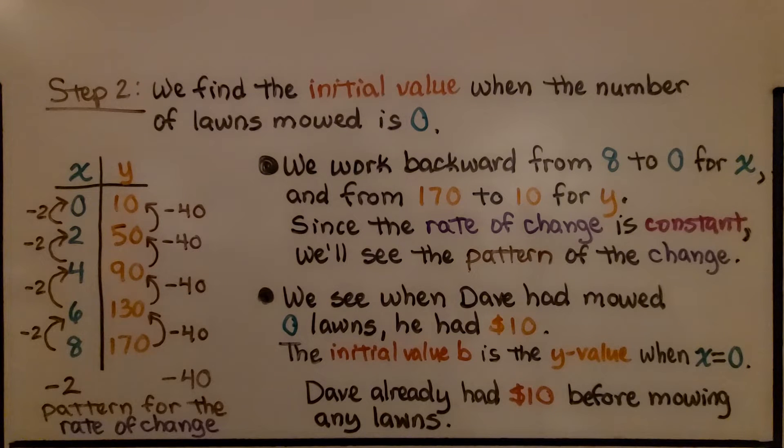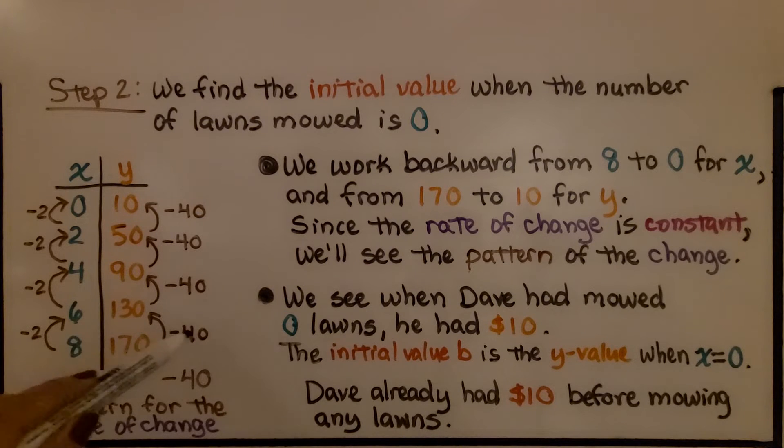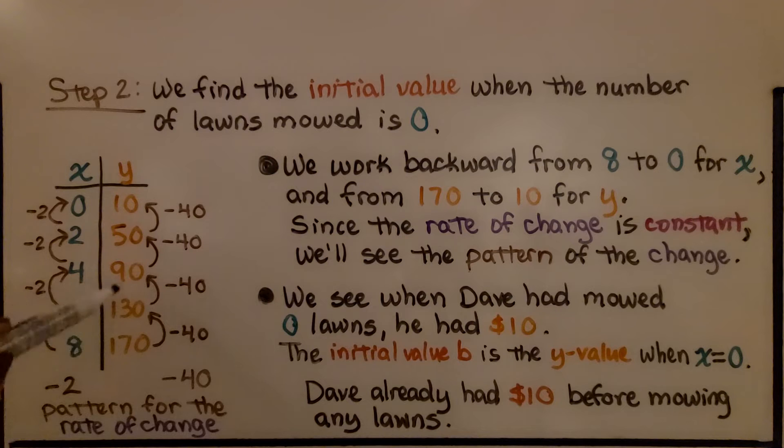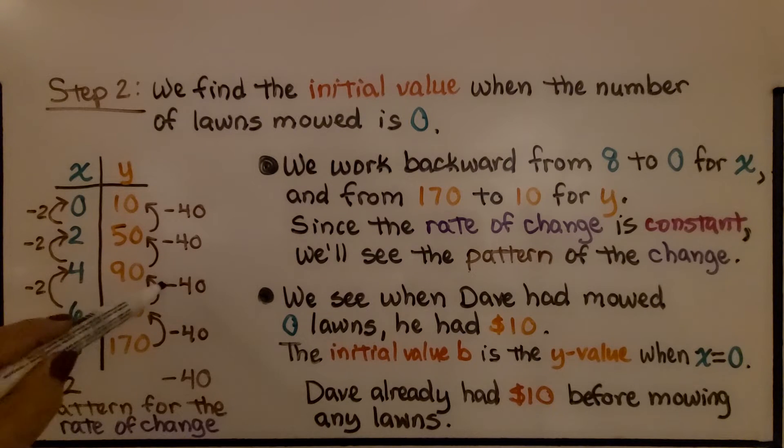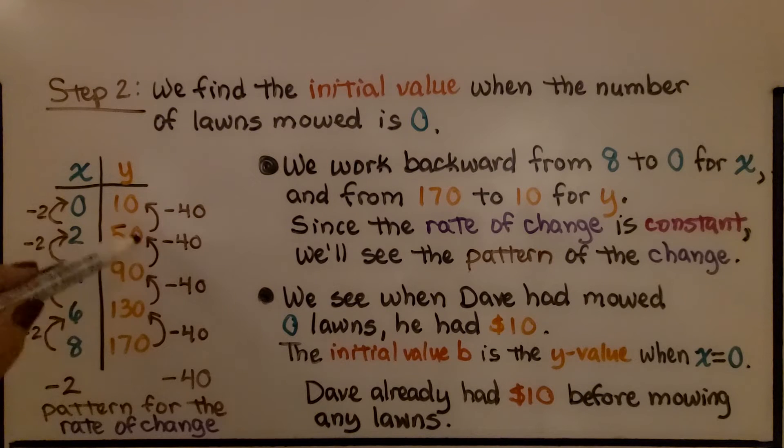We find the initial value when the number of lawns mowed is 0, when x is equal to 0. We work backwards from 8 to 0 for x and we can see the pattern is subtracting 2. We subtract 2 and get 6, subtract 2 and get 4, subtract 2 and get 2. If we subtract another 2, we'll be at 0 where we want to be, where x equals 0. But now we need to do this for y, for the y values. If we do 170 minus 130, we're subtracting 40. The difference between 130 and 90 is subtracting 40. The difference between 90 and 50 is subtracting 40, which tells us the y value when x is 0 is 10.